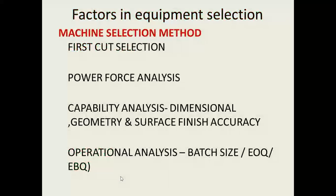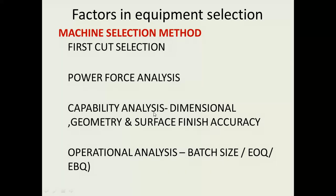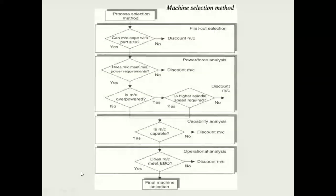There are four factors in equipment selection: machine selection method, first cut selection, power-force analysis, capability analysis, and operational analysis. A flowchart of the machine selection method is presented. First, you identify the process and sequence of operations, and based on this you select the machine.